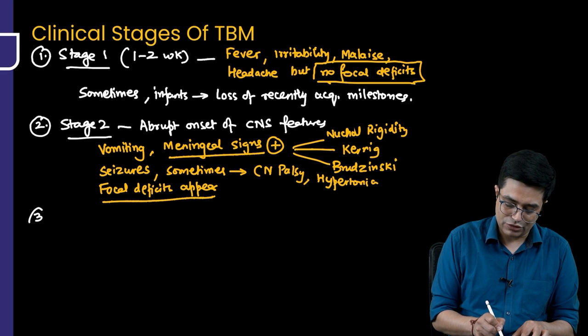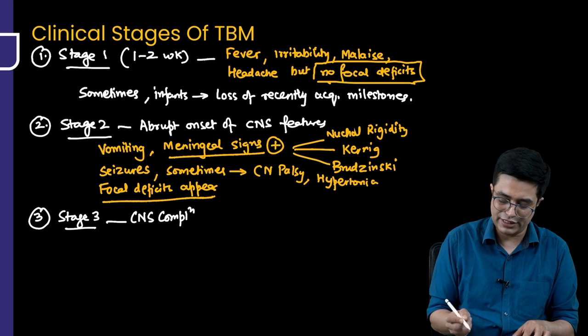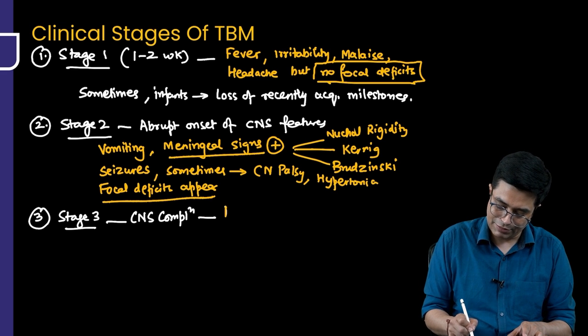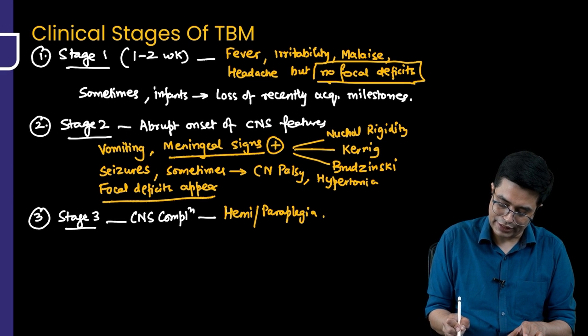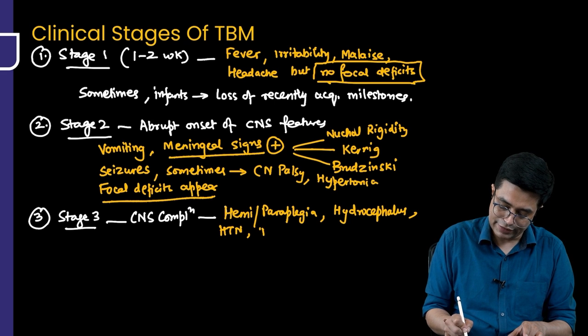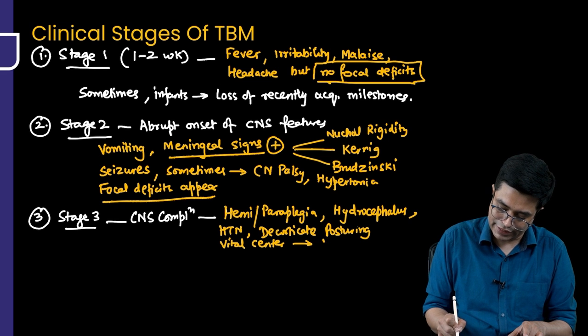Then we have stage 3. Stage 3 is called the CNS complication stage. This is the stage where there are CNS complications and non-CNS systemic complications will also happen. The patient will develop features like hemiplegia, there can be paraplegia, a patient can have development of hydrocephalus which can progress to raised intracranial pressure, there can be hypertension in the patient, there will be decorticate posturing due to involvement of vital centers. Vital center involvement can happen and that can lead to death in the patient.